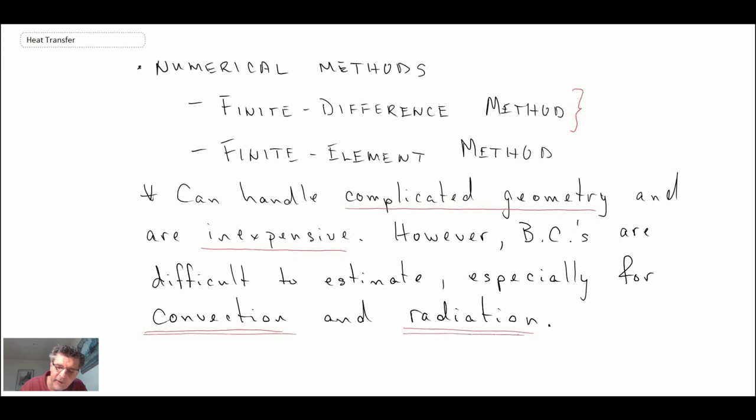If you remember the lecture segment on Leslie's cube, we had a cube with different surface finishes and we looked at it with the IR camera. We found that the copper surface that was slightly polished had a very different emissivity from the other surfaces. You need to know that emissivity to get accurate results. Consequently, the boundary conditions are the place that sometimes challenge engineers when using numerical methods to solve heat transfer problems.